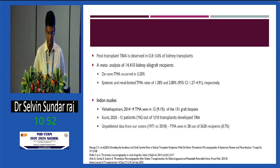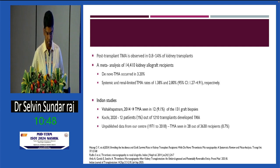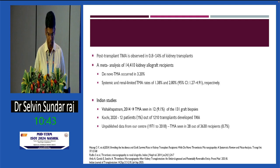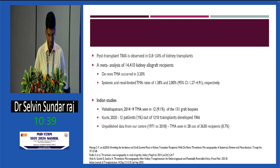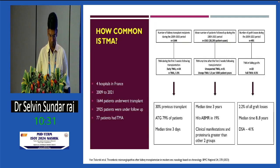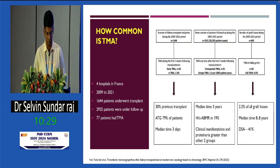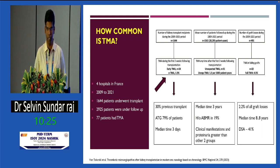How common is post-transplant TMA? Various case reports and case series report 0.8 to 14%. A recent meta-analysis showed de novo TMA occurred in 3.2%. Indian studies show 9.1% and 1%, and unpublished data from our center showed 0.7%. A recent study from France showed early TMA — within two weeks — can occur in up to 1.5%.